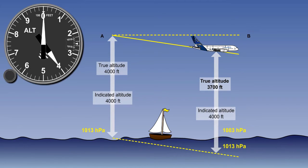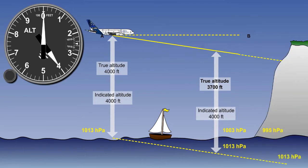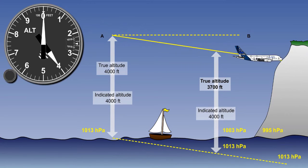For ease of calculation, let's assume a one hectopascal change in pressure equals 30 feet. When the aircraft arrives at B the aircraft's indicated altitude still shows 4000 feet, but the aircraft's true altitude is now only 3700 feet. You can see what may happen if the atmospheric pressure continues to fall and the altimeter pressure setting is not updated accordingly, especially in cloud or fog. When flying towards an area of lower pressure than that set on the pressure altimeter, the altimeter will over-read. Maintaining a constant indicated altitude will therefore result in the true altitude decreasing.